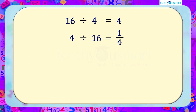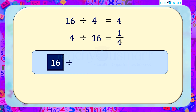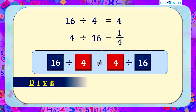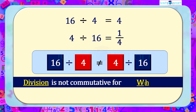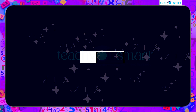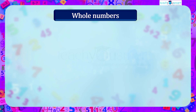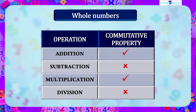The two situations have yielded two different results — 16 divided by 4 is not equal to 4 divided by 16. Hence, division is not commutative for whole numbers. To recap: whole numbers are commutative for addition and multiplication, but not commutative for subtraction and division.